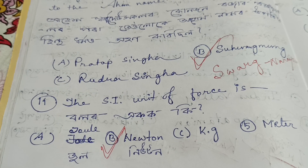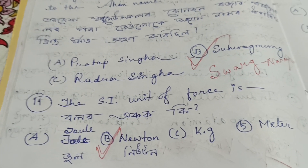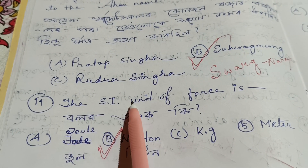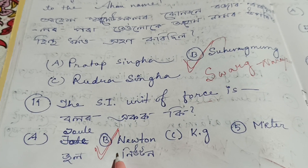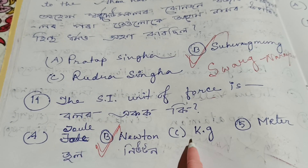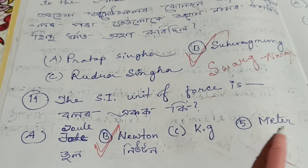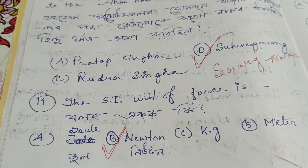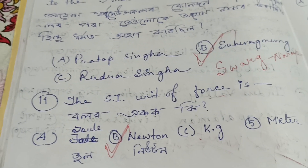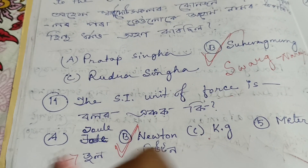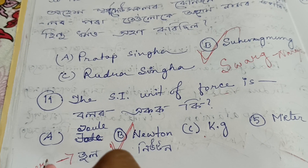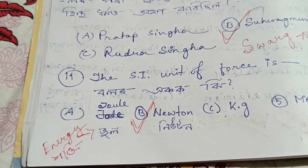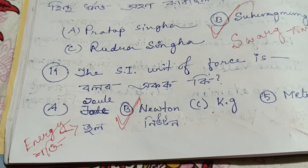Joule is the unit of energy. Joule means energy — hokti (power/energy). Hokti is Joule, energy is Joule.